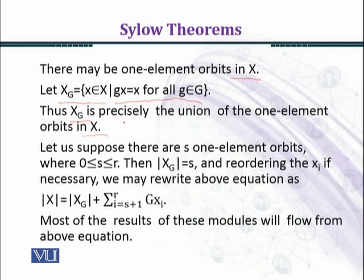Let us suppose there are s one-element orbits, where 0 ≤ s ≤ r. Then |X_G| = s, and reordering the xᵢ if necessary, we may rewrite the above equation as |X| = |X_G| + Σᵢ₌ₛ₊₁ʳ |Gxᵢ|.